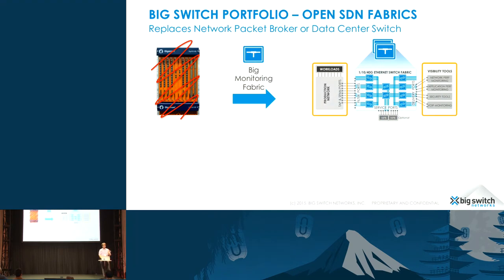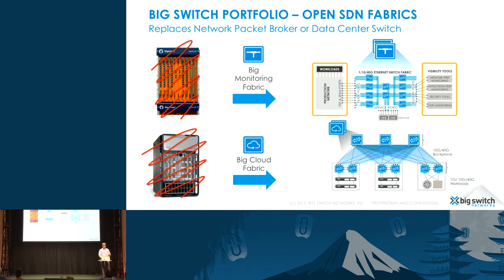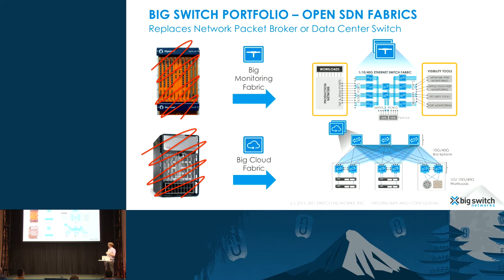We have two products. They're both basically taking large traditional boxes — either a network packet broker or a data center switch — and re-implementing those with new pizza box data center switches with smart software on top. This software uses SDN control technology, but that's more of an implementation detail. The benefit you get as a user is that you can actually manage your entire network from a single pane of glass.